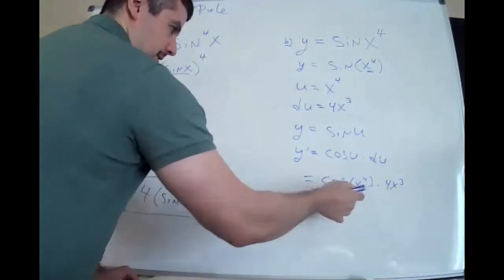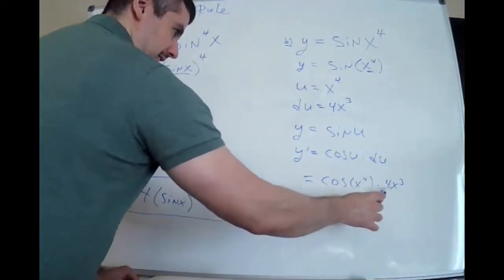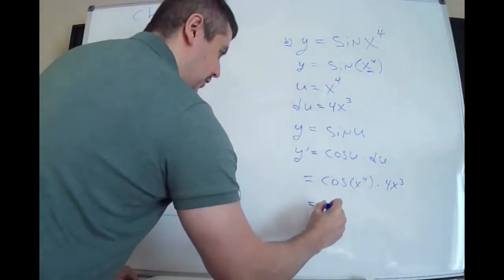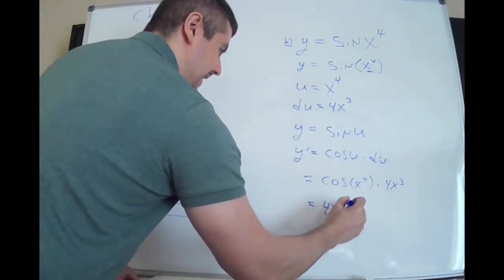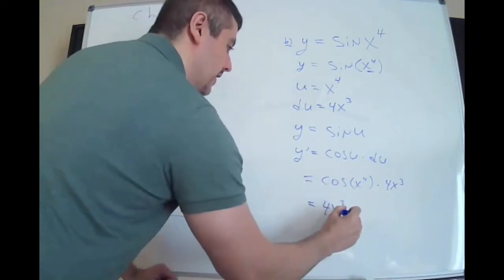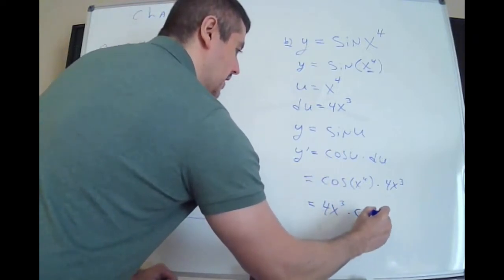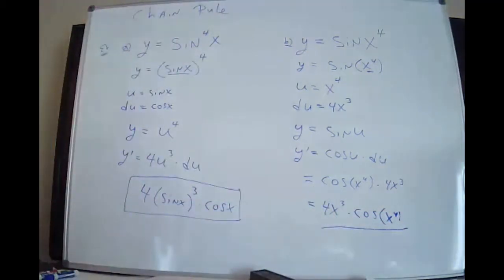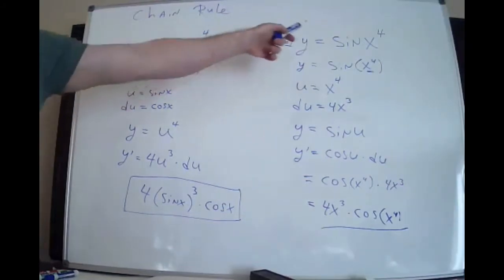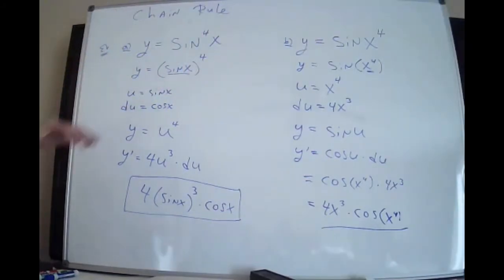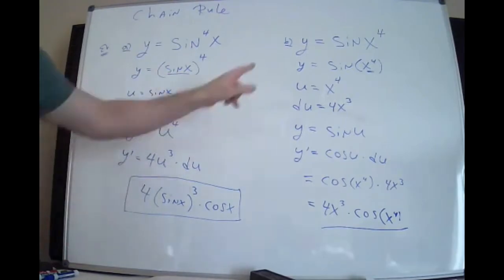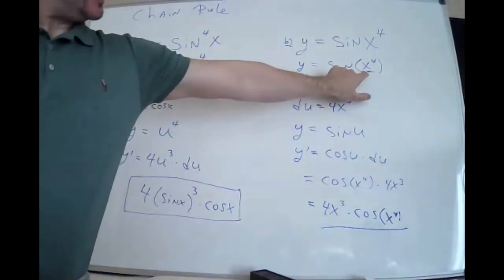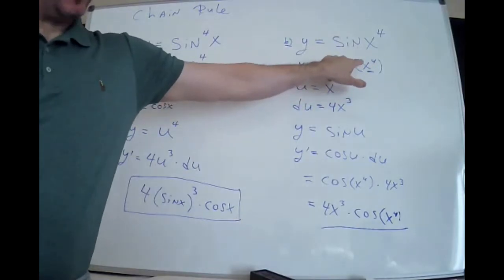There's a temptation here because you see x's near each other and your brain wants to combine them — you can't do that. I prefer to move the 4 to the front to avoid doing anything strange with those terms. Even though these two examples look similar, they're very different: here u is sine(x), there u is x⁴. It becomes clearer when you put parentheses around the angle.